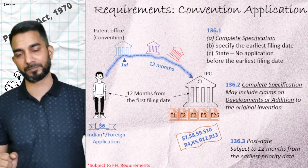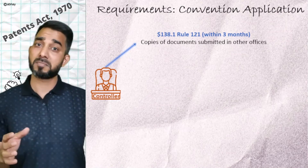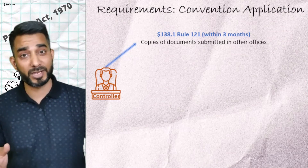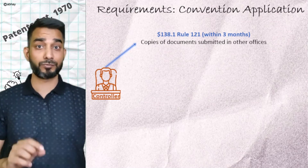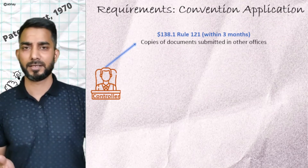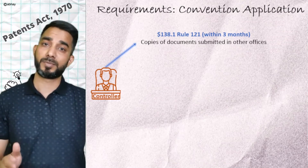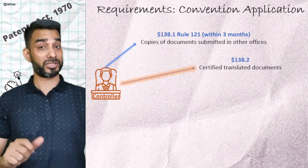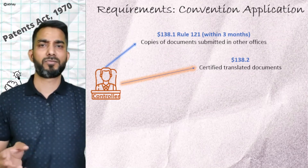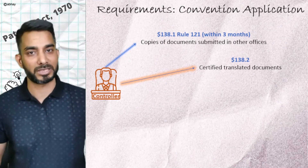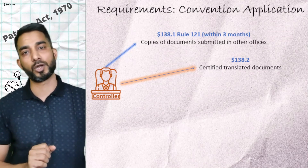As per Section 138.1, the Controller may request copies of a specification filed in the convention country and any other documents filed there — these must be submitted within three months of the Controller's request. All foreign language documents must be translated to English and duly certified copies submitted to the Patent Office, as per Section 138.2. Section 138.3 clarifies that the filing date will be the date certified by the head of the patent office of that country, or as evident from the patent registered in the convention country.